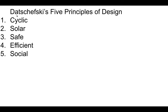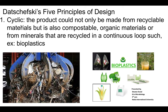There's a guy named Edwin Datschefsky, and he came up with five principles of design: cyclic, solar, safe, efficient, and social. Cyclic means the product is made from recyclable materials or compostable organic materials, or from minerals recycled in a continuous loop — such as bioplastics or recycled steel. The idea is to use as much recycled or compostable material as possible, feeding back into that cradle to cradle loop. This benefits the environment in the triple bottom line.